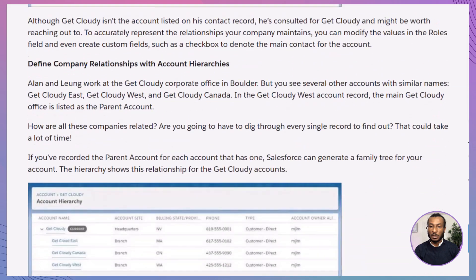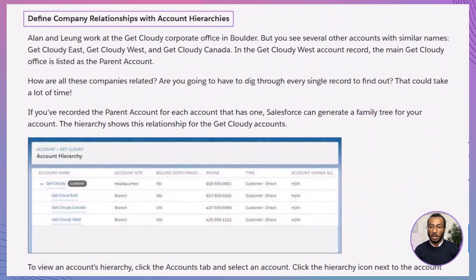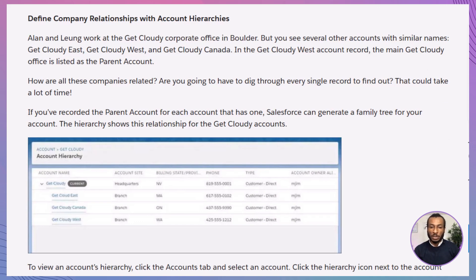Next, let's talk about account hierarchies. This comes in handy if you have a large company with multiple regional or subsidiary offices. For example, you might see related accounts like Get Cloudy East, Get Cloudy West, and Get Cloudy Canada. If Get Cloudy is the main head office, you would note this as the parent account on each regional office's record.